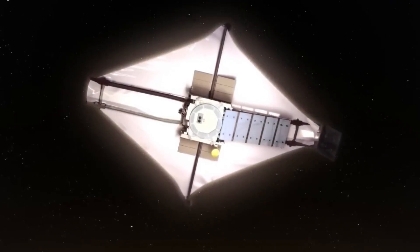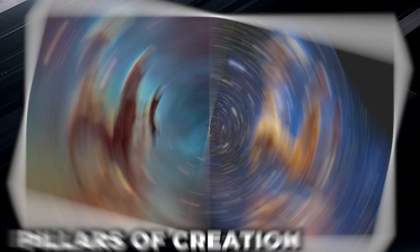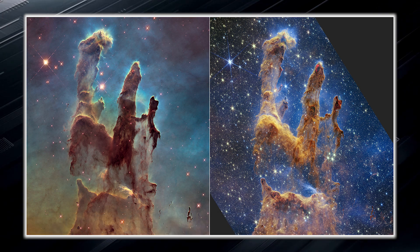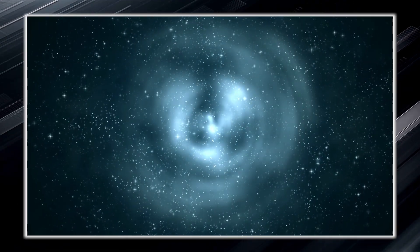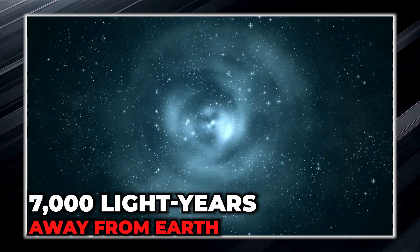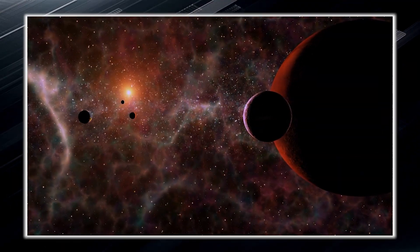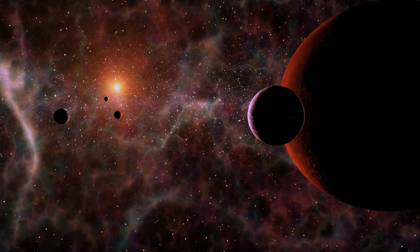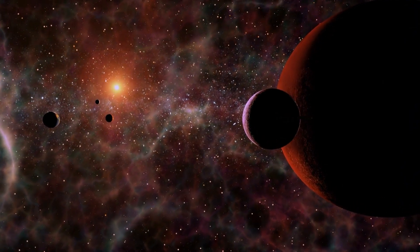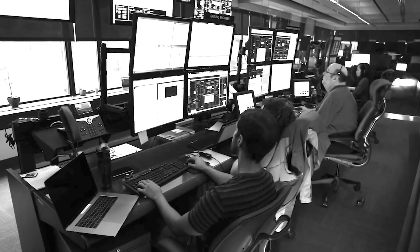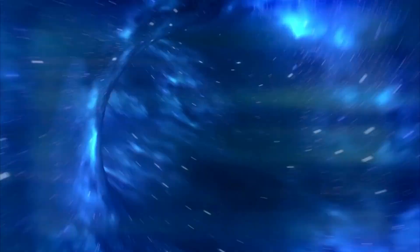When the James Webb turned its instruments toward the iconic Pillars of Creation, it captured the famous dust clouds in incredible detail. These pillars are located in the constellation Serpens, about 7,000 light years away from Earth. The Pillars of Creation are part of the Eagle Nebula, large clouds of gas and dust that were first photographed by the Hubble Space Telescope in 1995. Since then, the extraordinary beauty of the pillars has been revealed.